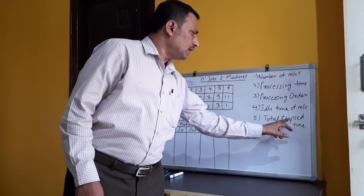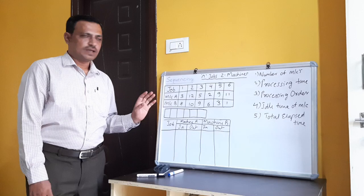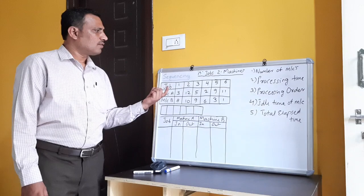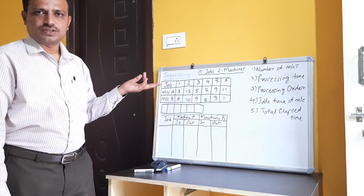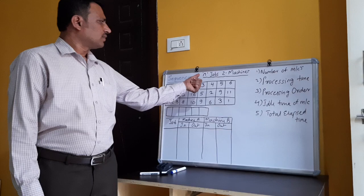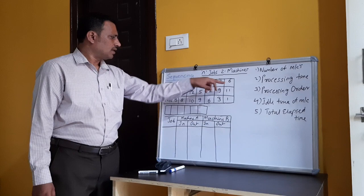These are the terminologies used in the sequencing problem. We have different cases: n jobs two machines, n jobs three machines, and n jobs m machines. First, we will start with n jobs two machines. Here we have a total of six jobs — one, two, three, four, five, six.